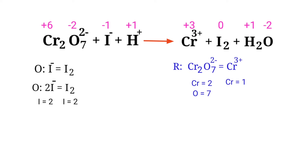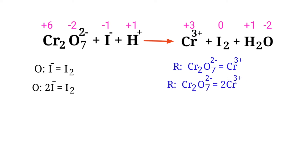Now you can balance the number of atoms in the reduction half reaction. To balance the chromium atoms, we need to put a coefficient of 2 in front of Cr3+. The chromium atoms are balanced; now we need to balance the oxygen atoms. To do this, we can produce water molecules.